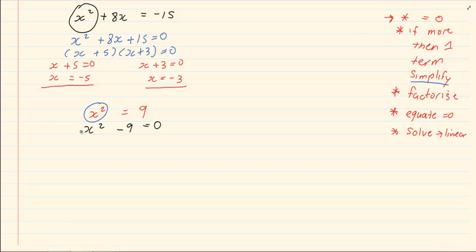Now we factorize. This is difference of two squares. We have x minus 3, x plus 3 is equal to 0.